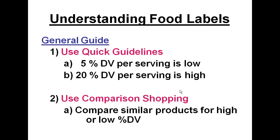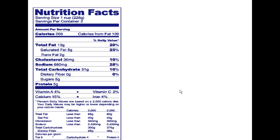To comparison shop and compare two similar products, look at those percentages — they can be very helpful in making a correct choice. Instead of having to search all over and trying to determine whether something is good or bad, you can use that 5%/20% rule as a quick guide for making choices. Now I'd like to go through a food label and show you how they get the information.